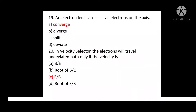Question No. 20: In Velocity Selector, the electrons will travel on undeviated path only if the velocity is? Option A: B by E. Option B: Root of B by E. Option C: E by B. Option D: Root of E by B. Correct answer is Option C: E by B.